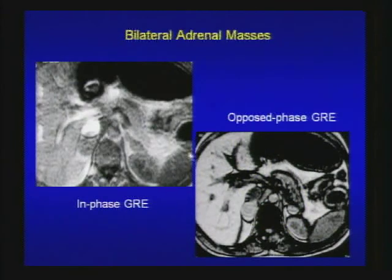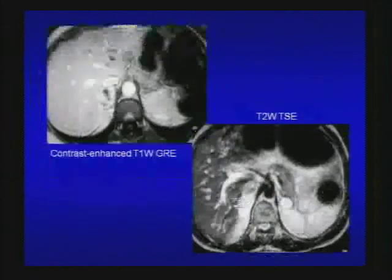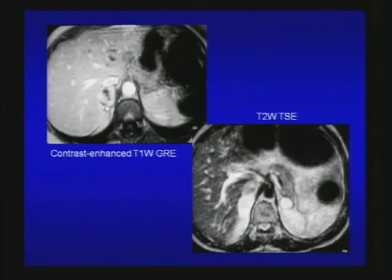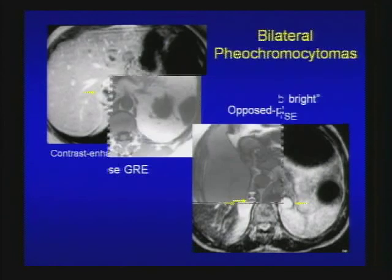Another case of bilateral masses. No significant signal drop on opposed-phase image compared to the spleen — not typical for adenoma. On contrast-enhanced MR, heterogeneous enhancement and very bright on T2-weighted images — light bulb bright. This is a case of bilateral pheochromocytoma.